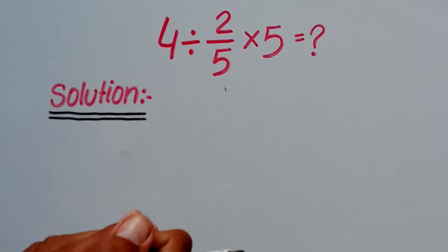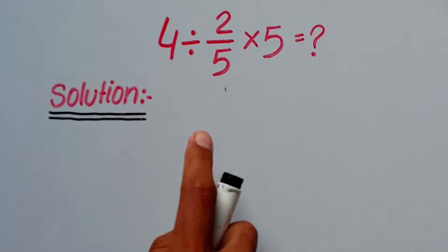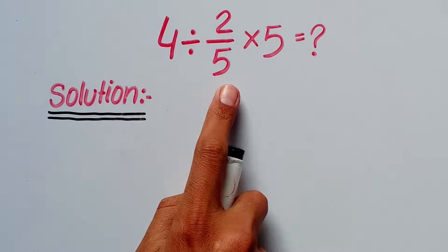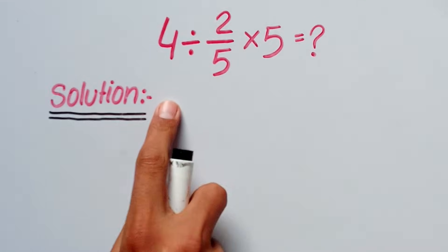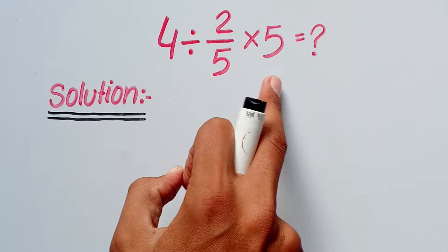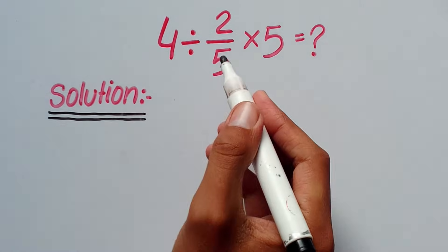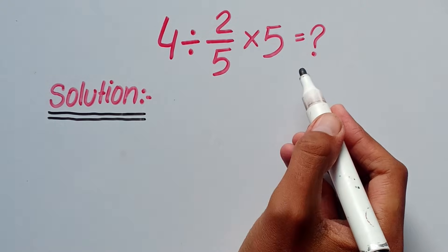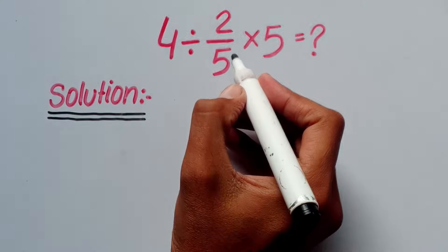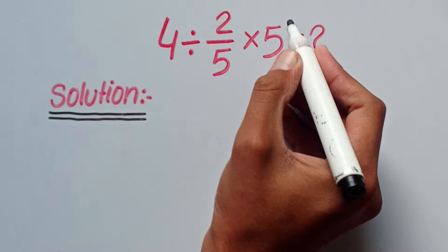Hello everyone. In this video we will solve this math question: 4 divided by 2 divided by 5 times 5. Most people solve this question using a wrong method — they cancel this five and this five.